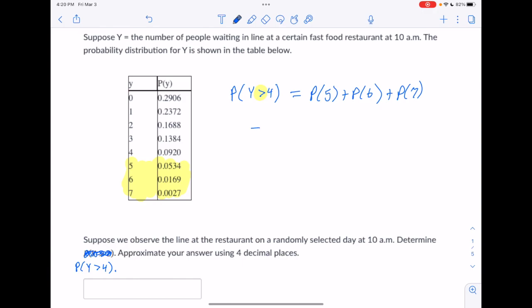And then those are all given to us in the table, so we just read them off and write them down. The probability of 5 is 0.0534 plus the probability of 6 is 0.0169, and the probability of 7 is 0.0027. And then at this point, we just go to the calculator and add those up. Since it's a straightforward addition, I'll just jump to the answer. When you add those four together, you get 0.0730.